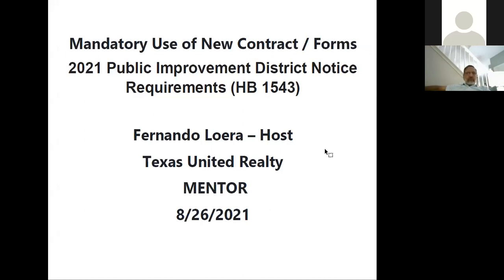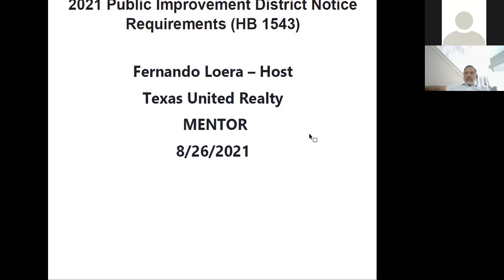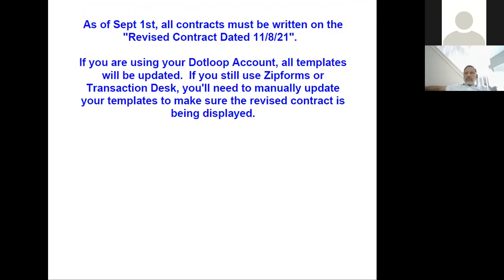Specifically with the 2021 Public Improvement District — PID — which is the acronym we're using. This comes from House Bill 1543, and it's really critical. It's essentially a levy tax. As of September 1st, which is just around the corner, all contracts must be written on the revised contract dated 11/8/2021.